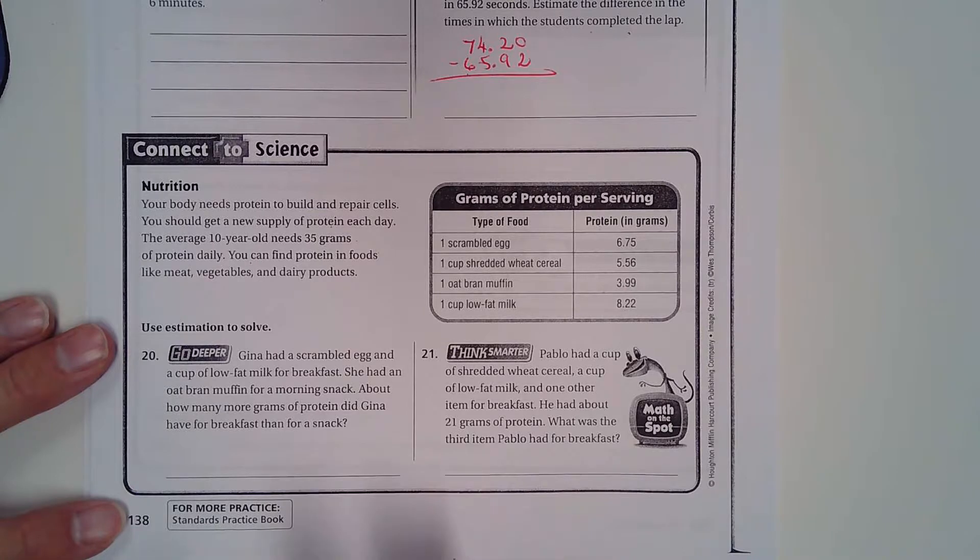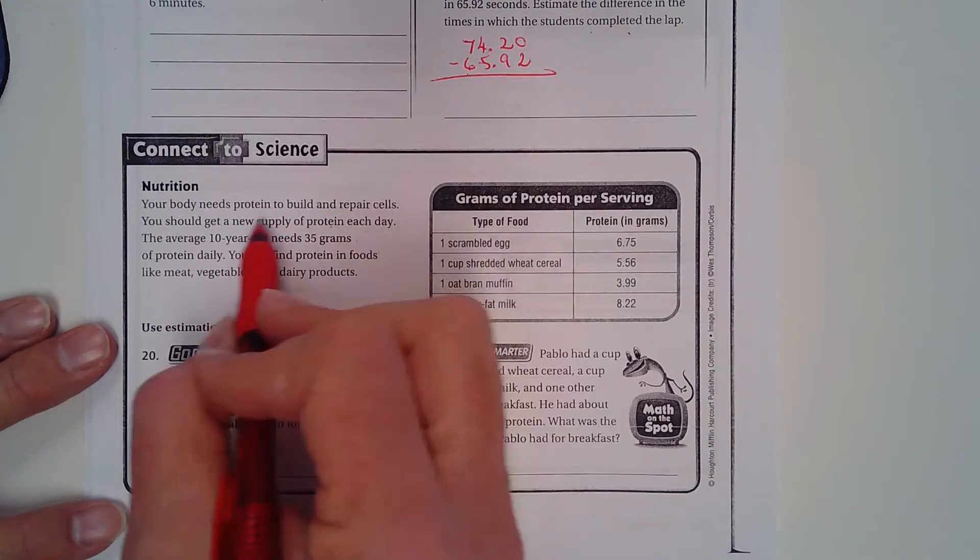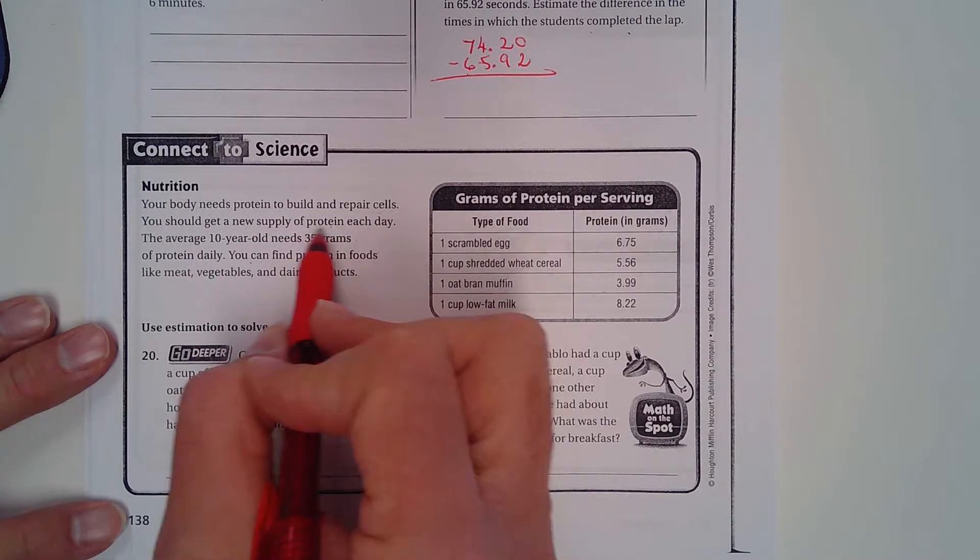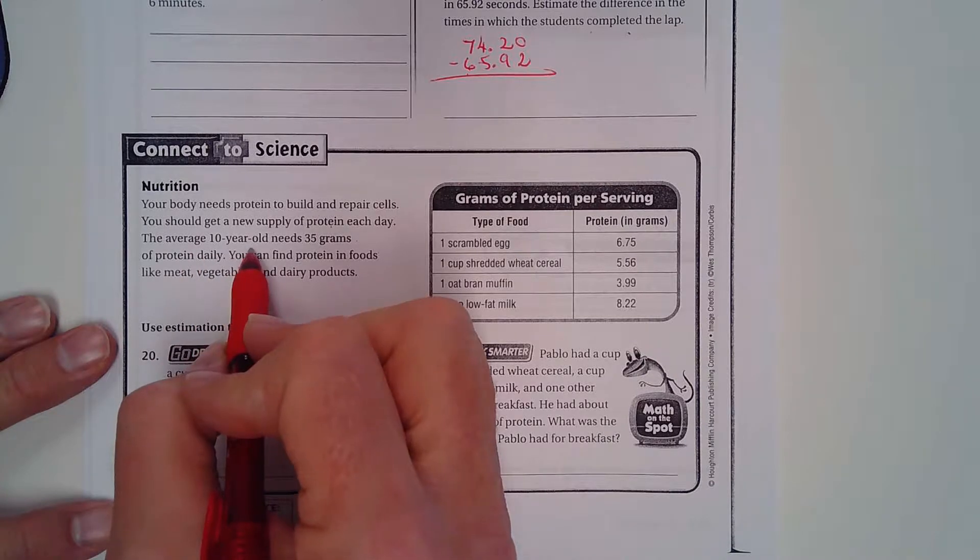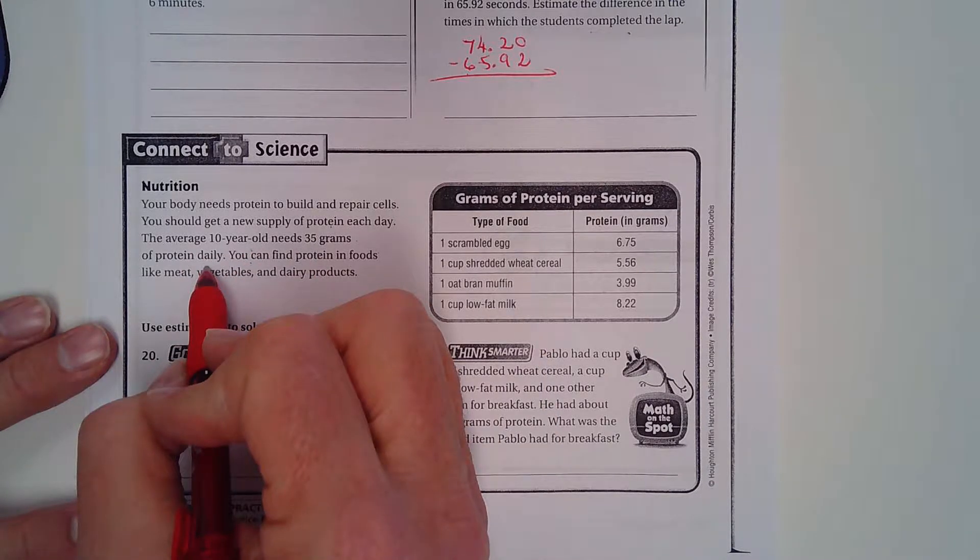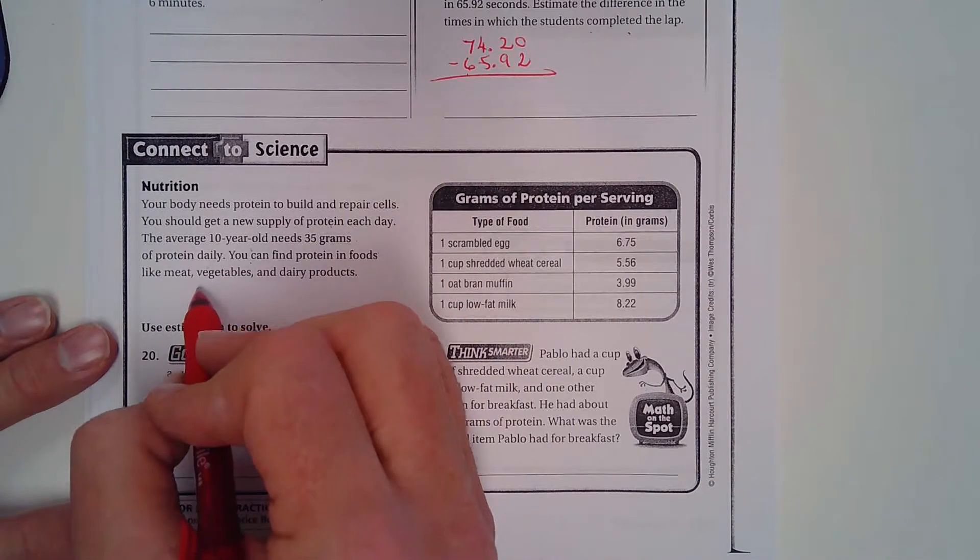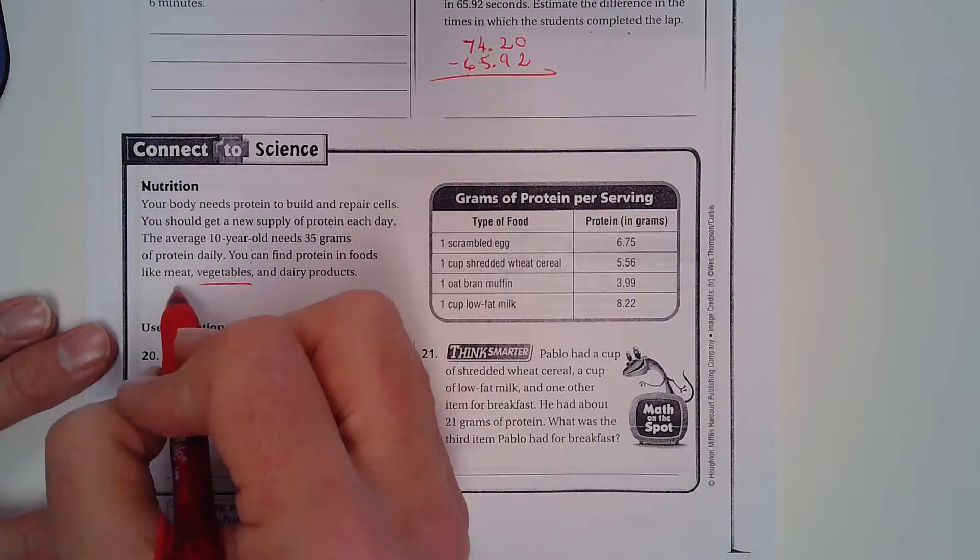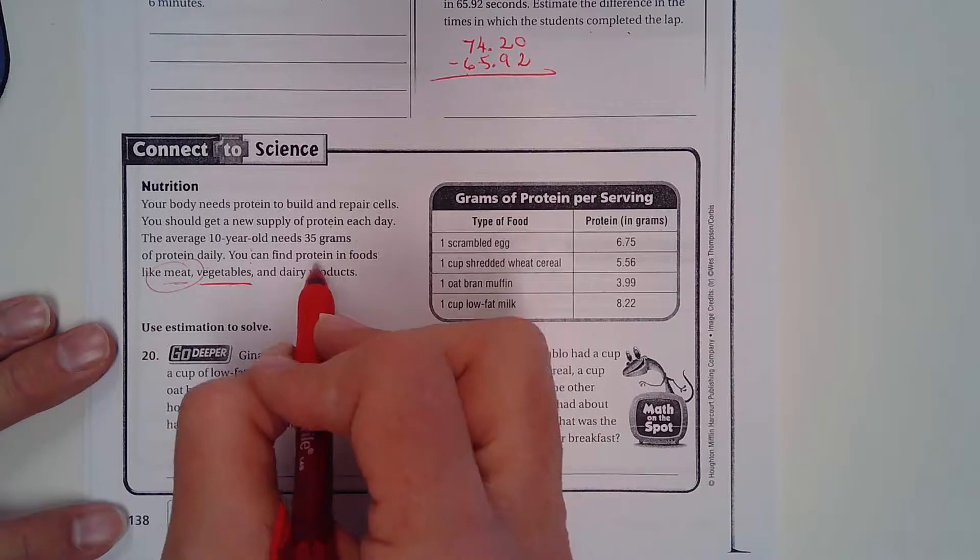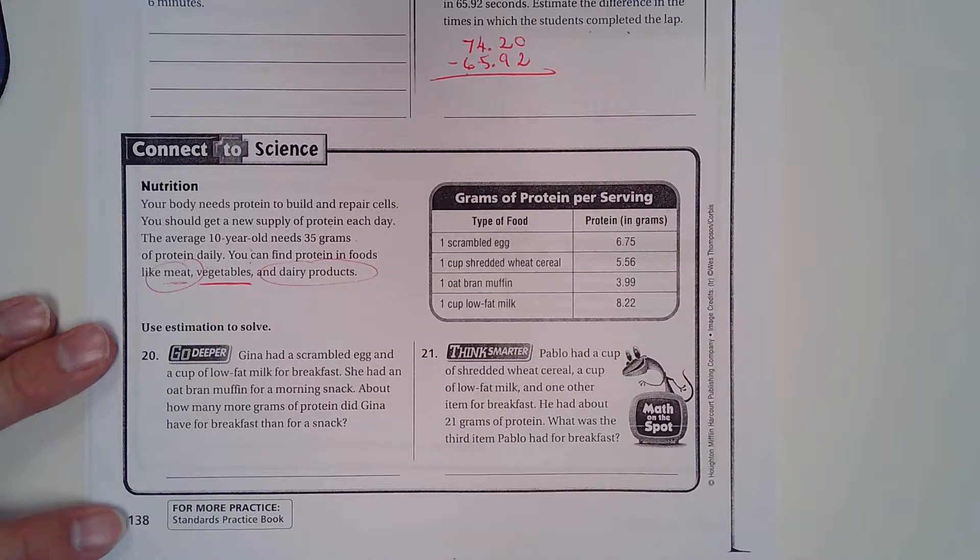Nutrition. Your body needs protein to build and repair cells. You should get a new supply of protein each day. The average 10-year-old needs 35 grams of protein daily. You can find protein in foods like meat, vegetables - well, you're not going to get a lot of protein in vegetables - but you will certainly get a lot in meat and dairy.